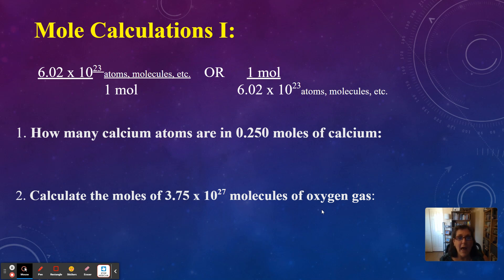How many calcium atoms are in 0.250 moles of calcium? Now, if I had said one mole, we wouldn't even have to do a calculation because we know one mole is 6.02 times 10 to the 23rd atoms. But we don't have one mole. We have a fourth of a mole, don't we? We have 0.250 moles. That's not one mole. So we need to do a calculation.